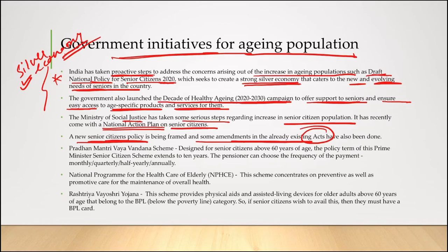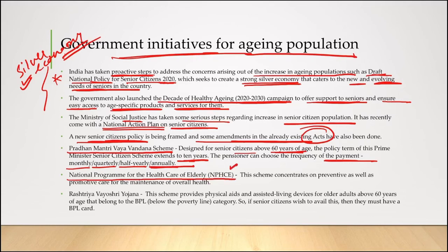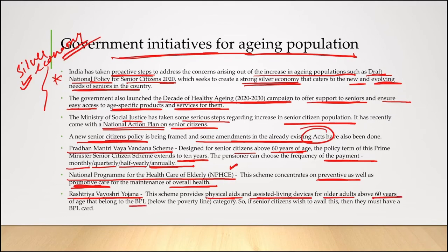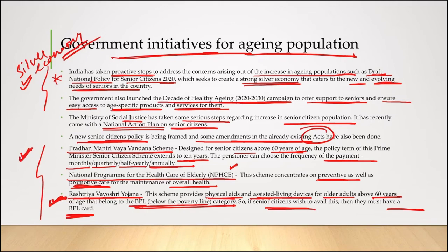There are few other key schemes the government has initiated. The Pradhan Mantri Vaya Vandana Scheme is designed for senior citizens above 60 years of age; its policy term has been extended to 10 years and the pensioner can choose the frequency of payment on a monthly, quarterly, half-yearly, or annual basis. The National Programme for Health Care of the Elderly concentrates on both preventive and promotive care for the maintenance of overall health of senior citizens. The Rashtriya Vayoshri Yojana provides physical aids and assisted living devices for older adults above 60 years of age who belong to the Below Poverty Line category. Apart from these, there are other major schemes as well.